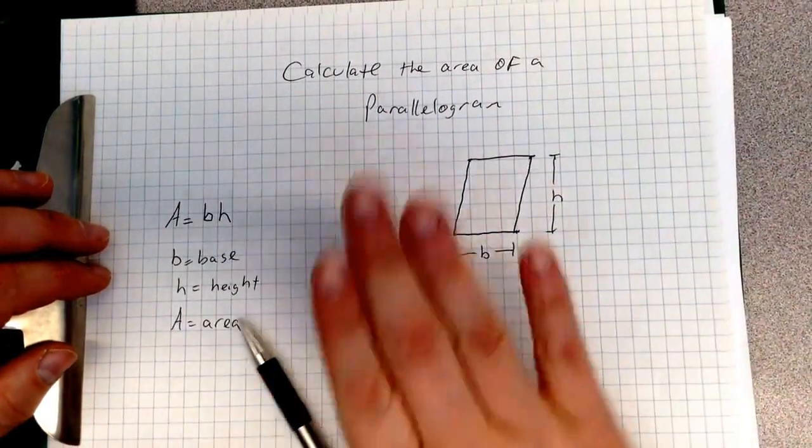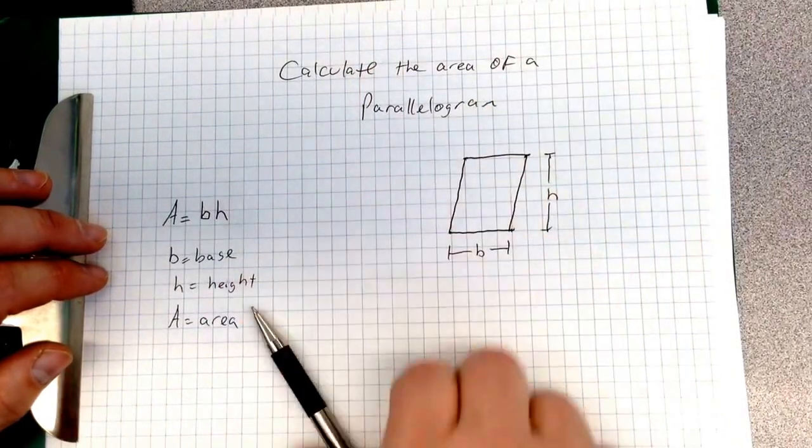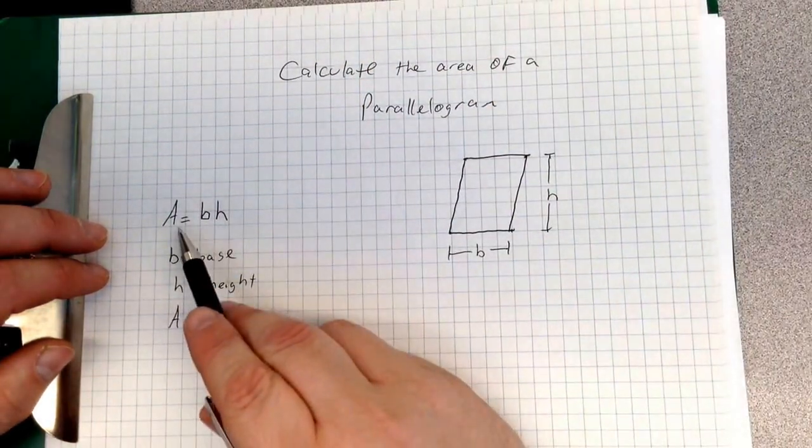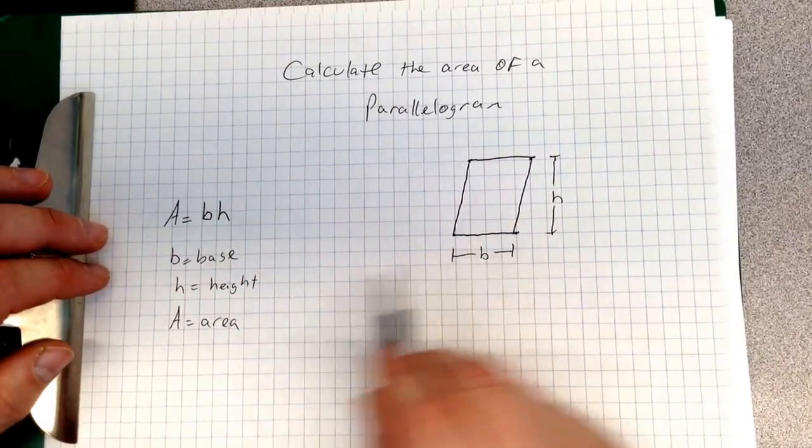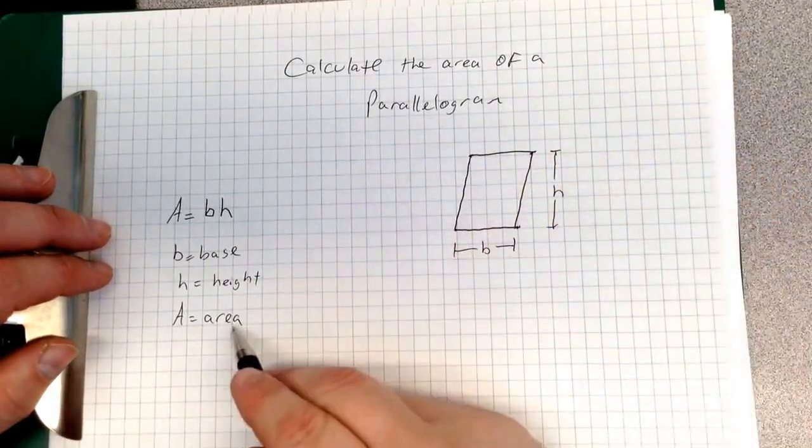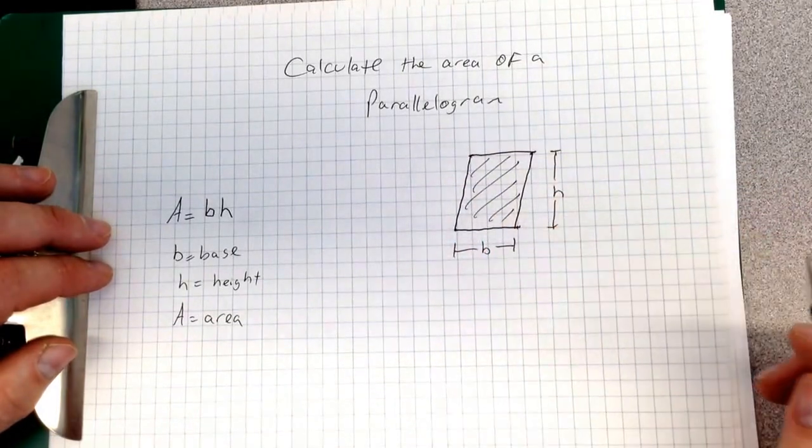A parallelogram is much like a square, just shift it a little bit. The equation that you need to know is area equals base times height. B is your base, H is your height, and A is the area that we want to figure out.